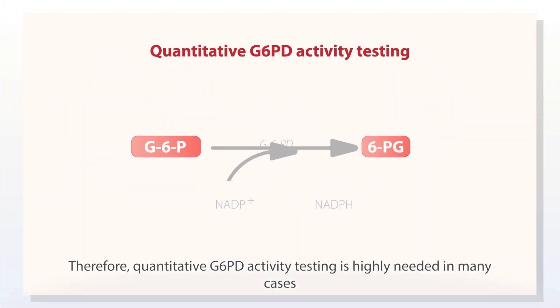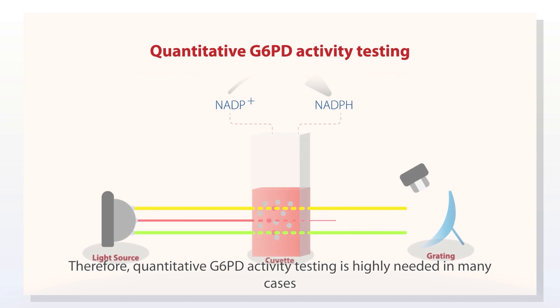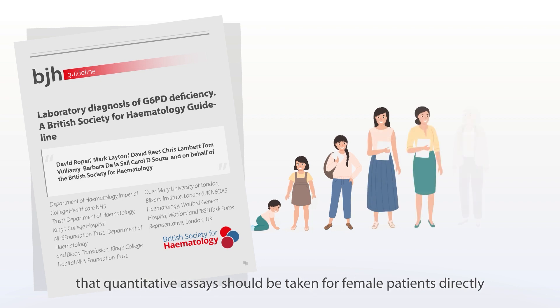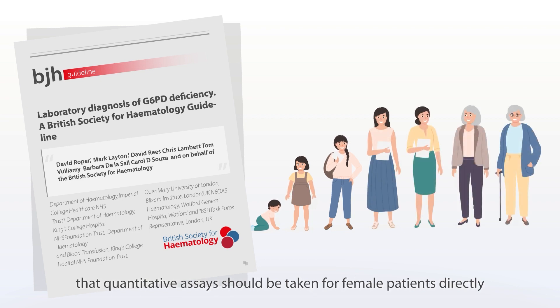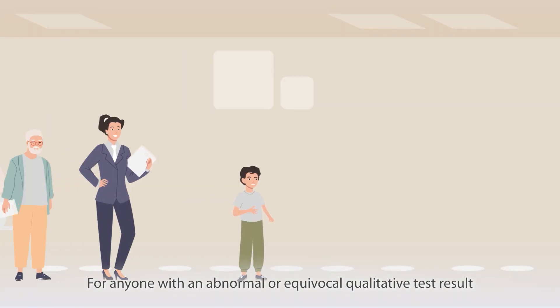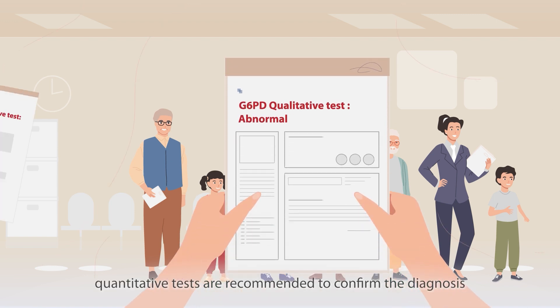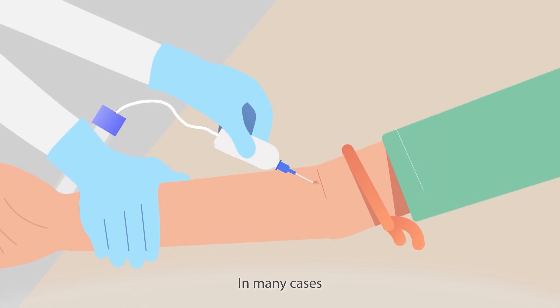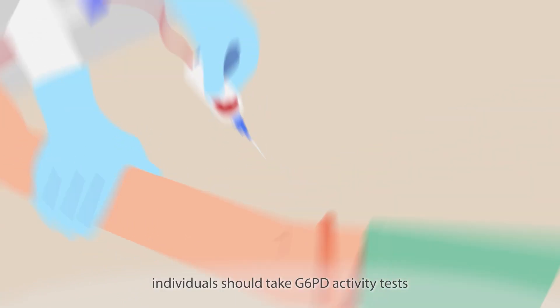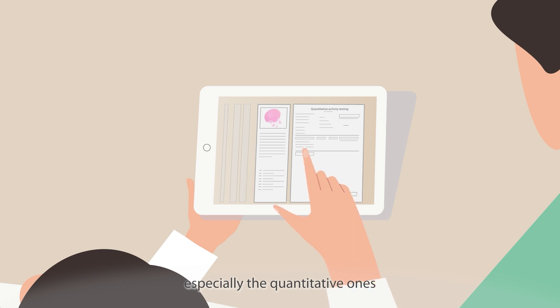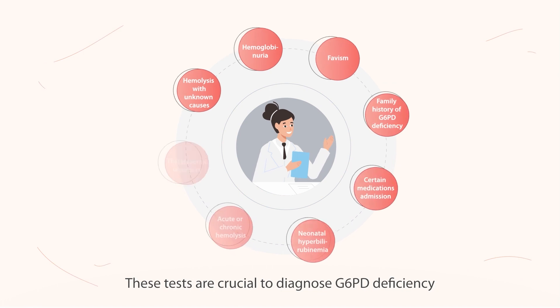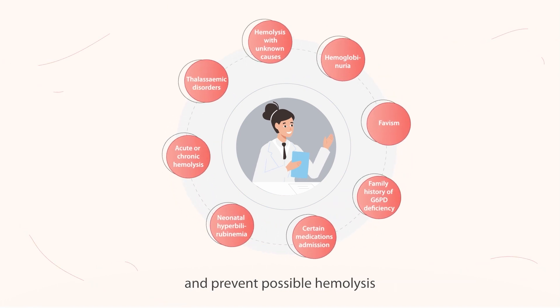Therefore, quantitative G6PD activity testing is highly needed in many cases. The British Society for Hematology guidelines suggest that quantitative assays should be taken for female patients directly. For anyone with an abnormal or equivocal qualitative test result, quantitative tests are recommended to confirm the diagnosis. These tests are crucial to diagnose G6PD deficiency and prevent possible hemolysis.